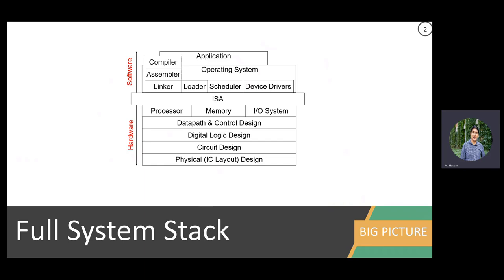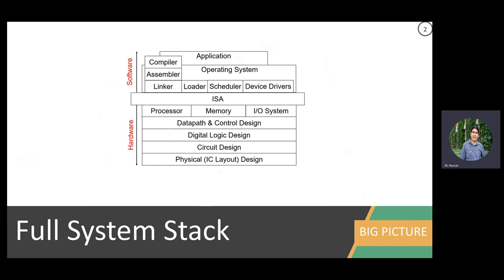The big picture is: I have my application, I develop it, so you have to take software development or software engineering courses. You need to take a compiler course to know how to efficiently map your source code to binary that fits the hardware. And you need to take an operating system course to know how to handle multiple applications on a machine.